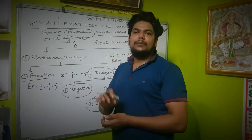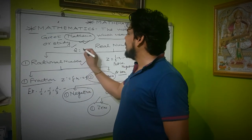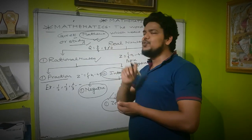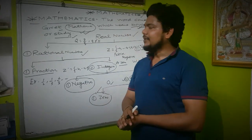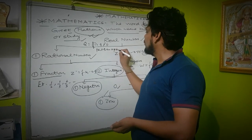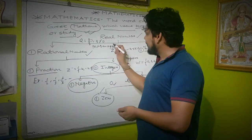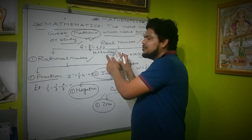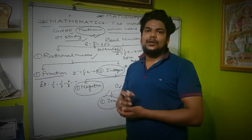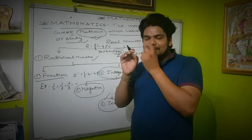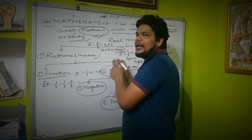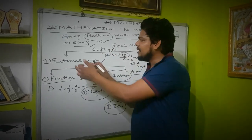A number is said to be rational if it can be written in the form p upon q, where q is not equal to 0. We call it a rational number when P and Q are co-prime. Co-prime means there is no common factor other than 1 — that is, the HCF of the two numbers is 1. So if P and Q are co-prime and q ≠ 0, the number is rational.